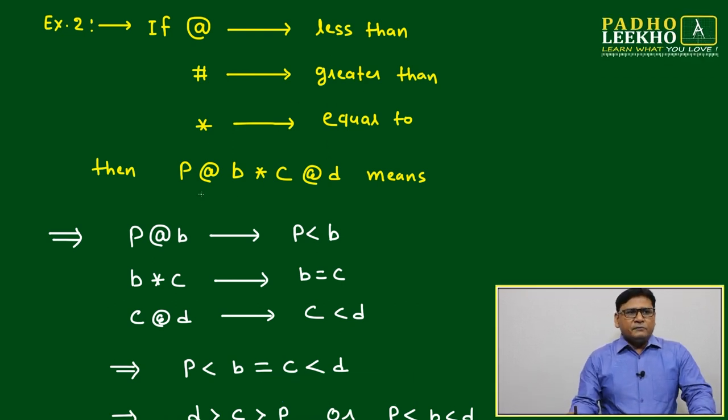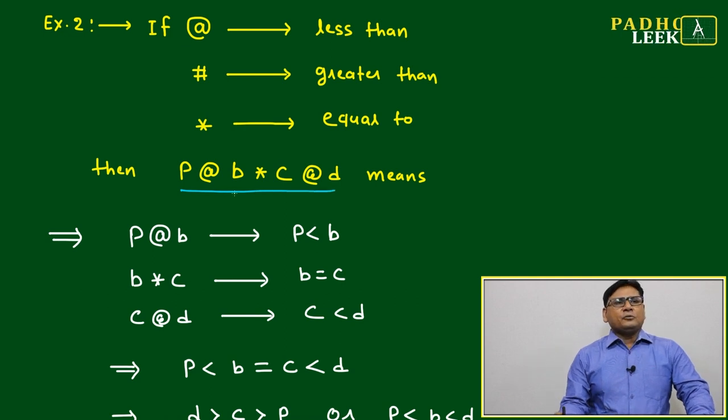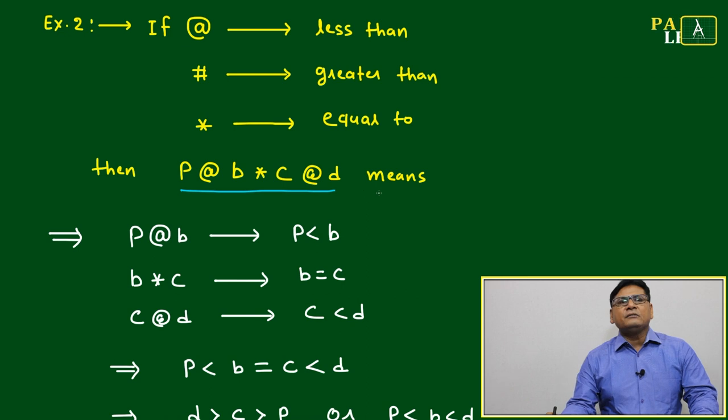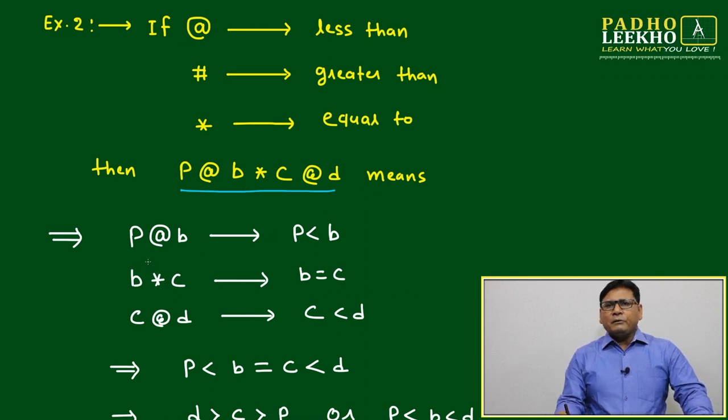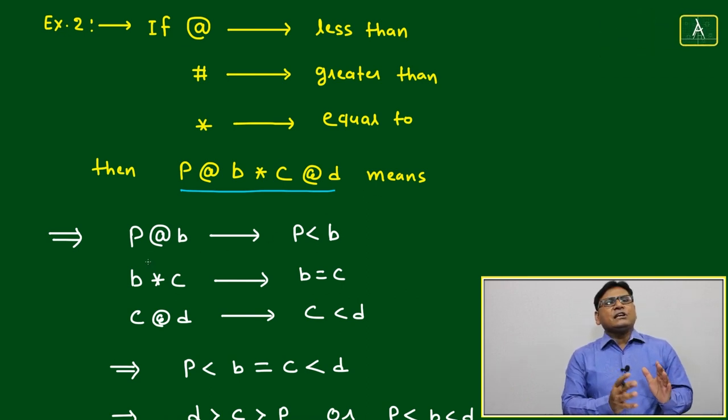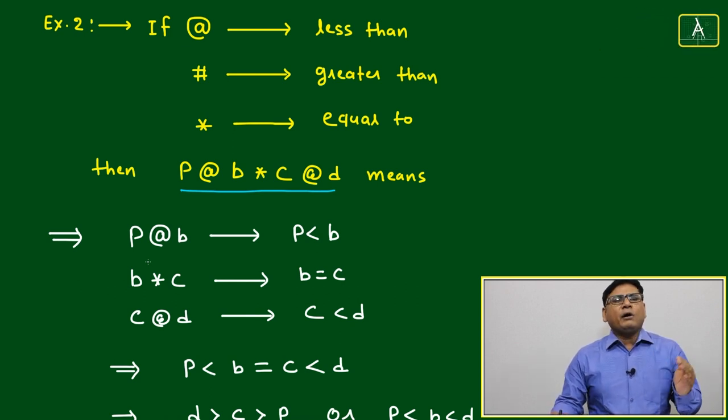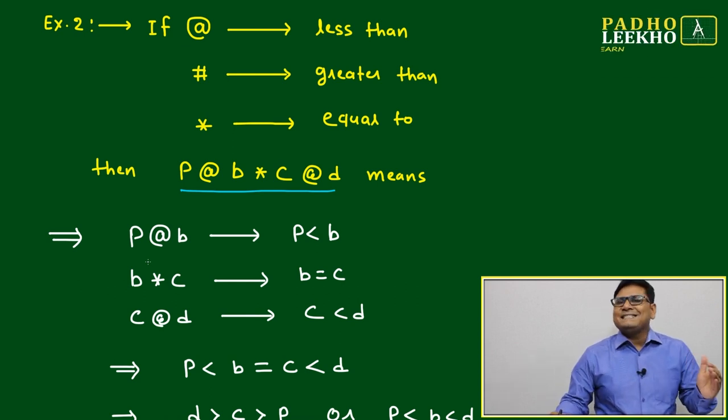Then we have to just find out P @ B, B * C, and C @ D means what. We have to just break down this relation into small relations. Then we will be able to find what can be the relation between P, B, C, and D.